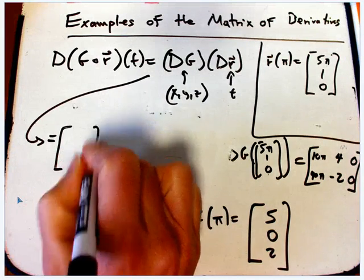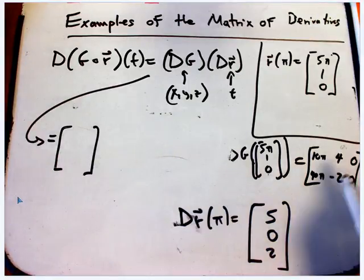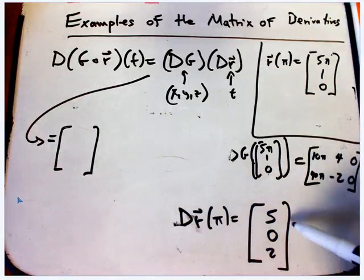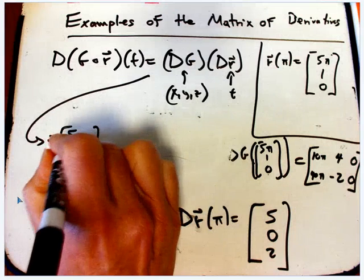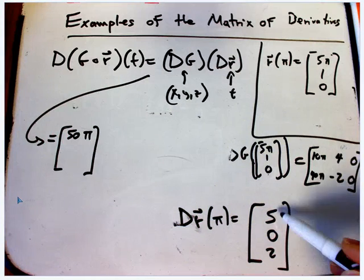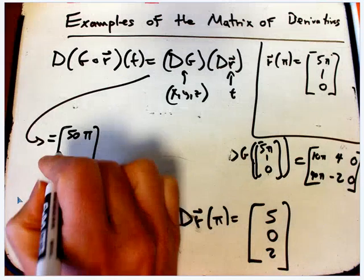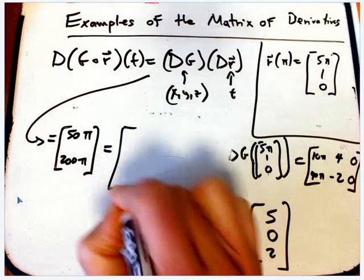What do we expect to get? It has one input and two outputs. So it should just be a little two component column vector. And 10π, 4, 0 matched with 5, 0, 2, not much survives. It's just going to be 50π. And then 40π, -2, 0 matched with 5, 0, 2, not much survives there either, 200π.